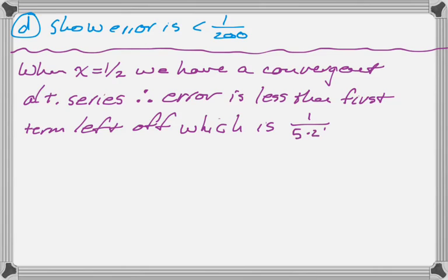And in this case, that's 1 over 5 times 2 factorial times 1 half to the 5th. That's 1 over 10 times 1 over 32. So that's 1 over 320. And 1 over 320 is definitely less than 1 over 200.